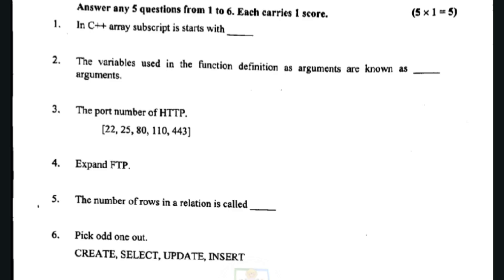The next question: the variable used in the function definition as an argument is also known as a formal argument. Variables used in function definitions are called formal arguments.